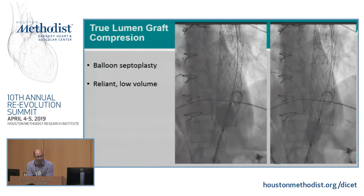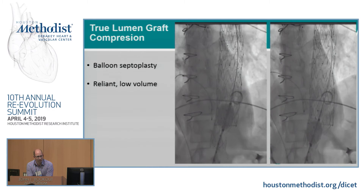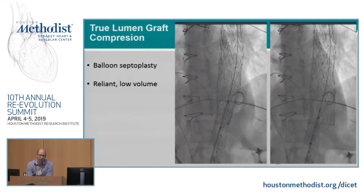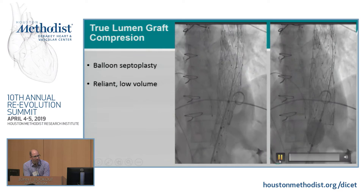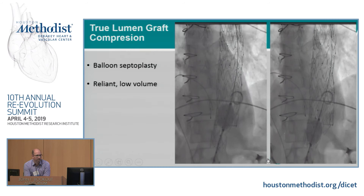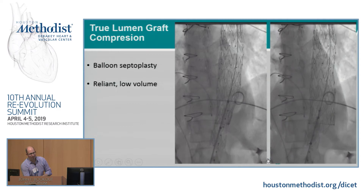The distal aspect of this graft is very constrained by the true lumen. This is a balloon septoplasty where we put a 20-millimeter balloon in at low inflation pressure — about 12 to 14 cc's — and just barely pushed and popped that septum open to fully expand the graft and get a better distal seal. It's a harrowing experience. We've done it a couple of times with pretty good results, but in a 42-year-old with Marfan's, this is probably the scariest part of the case.